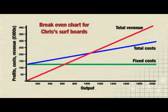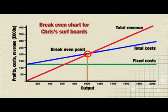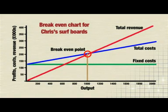See how the total revenue and total cost lines cross here — this is the break even point. So, Chris needs an output of 1,000 surfboards to break even. If you remember, we've used the same figures for this chart as we did when we worked out the break even using the contribution formula.